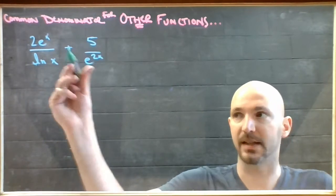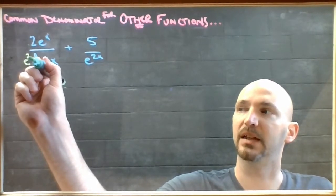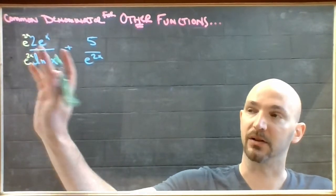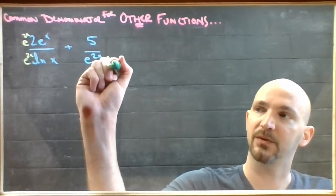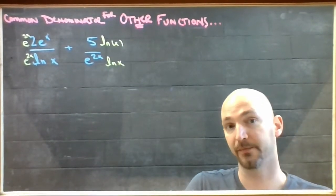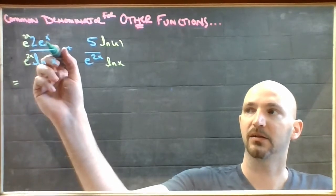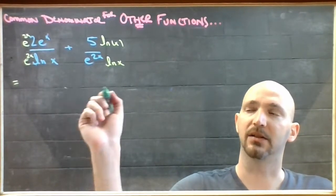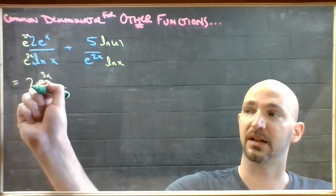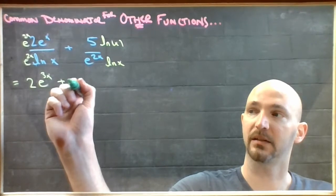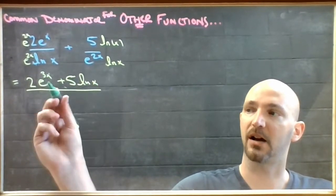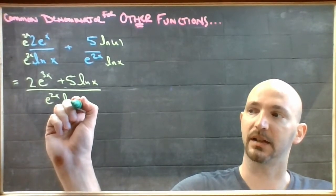In order to work this out, I'm going to have to introduce a factor of e to the 2x, both the numerator and the denominator in that term, and I'm going to have to introduce a factor of ln x into the numerator and denominator of this term. Now if I do that, e to the x times e to the 2x is e to the 3x, and this number 2 is just kicking around, plus five of these, all over the shared denominator of e to the 2x ln x.